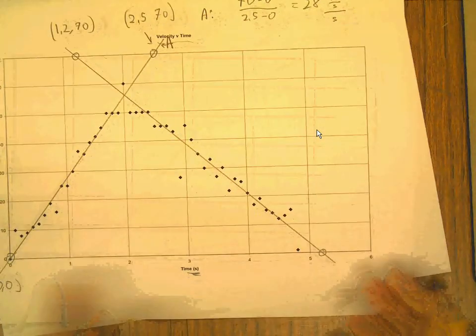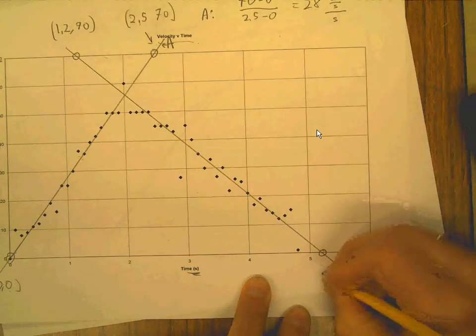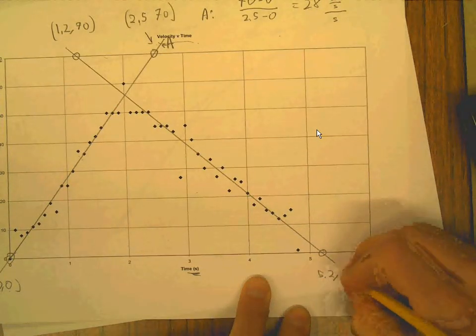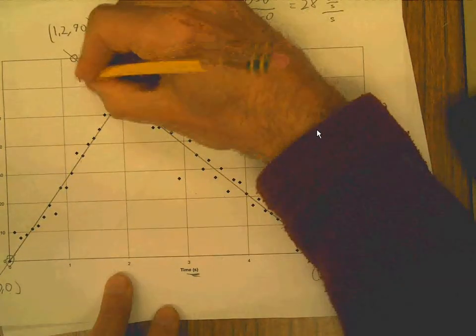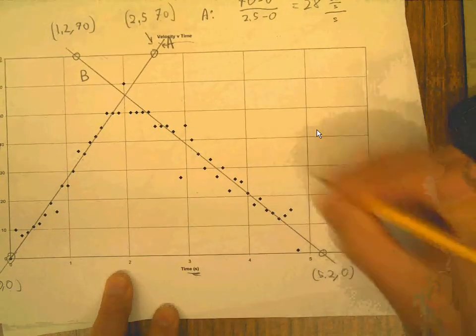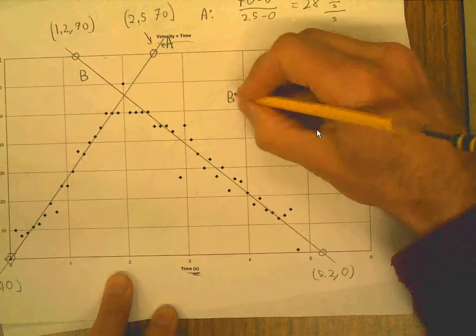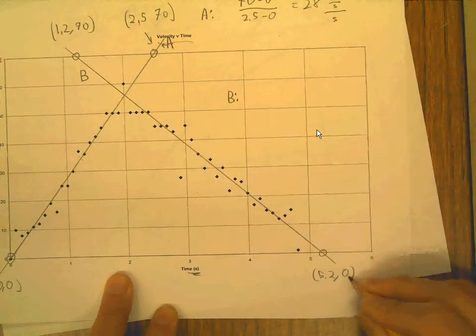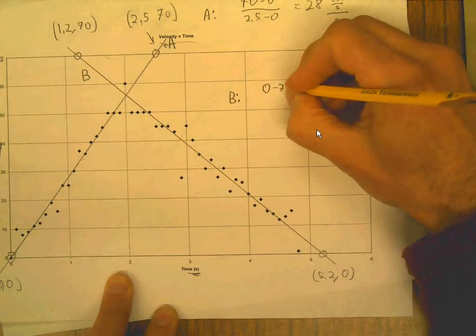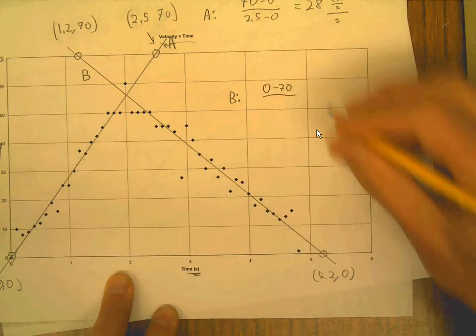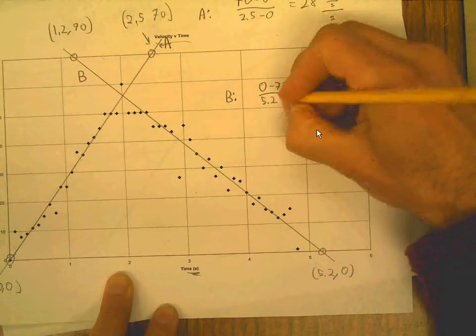And this spot here looks like to be 5.2 and up zero, okay? And that's line B. And the slope of line B to me looks like, well, rise over run, so zero minus 70, right? Divided by 5.2 minus 1.2.